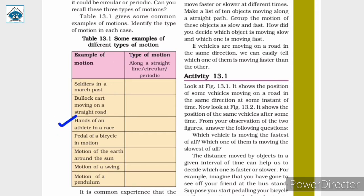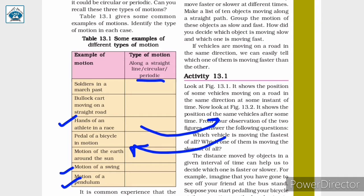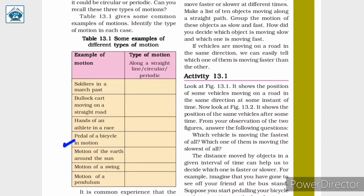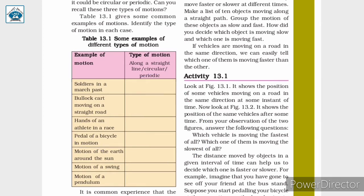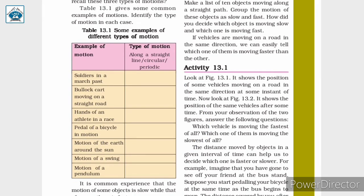Next, hands of an athlete in a race — the hands are in back and forth motion, similar to the motion of a pendulum. So the motion of a pendulum, a swing, and hands of an athlete in a race are back and forth motions, which are periodic motion. Similarly, the pedal of a bicycle moves in a circular path, so it is circular motion.